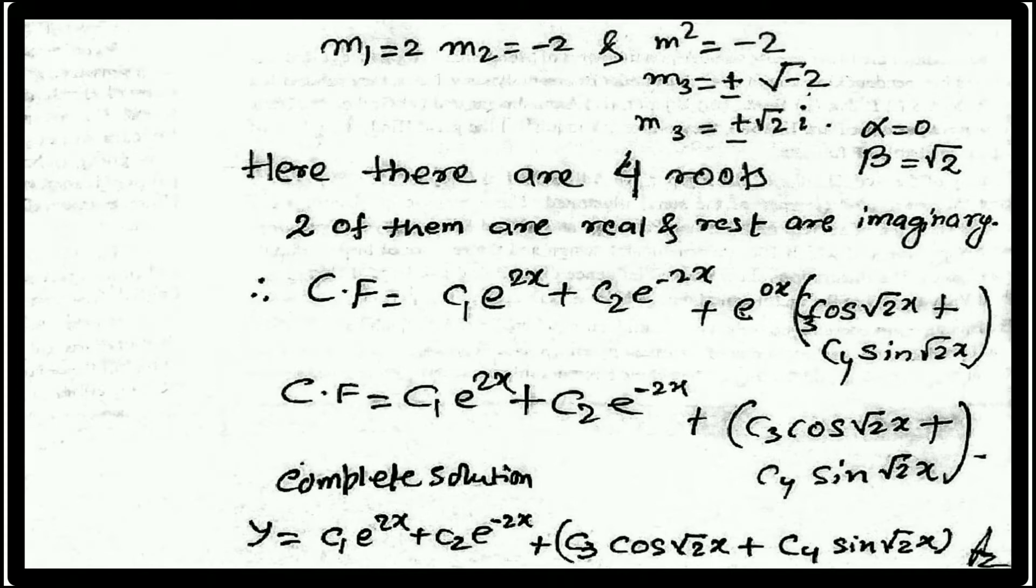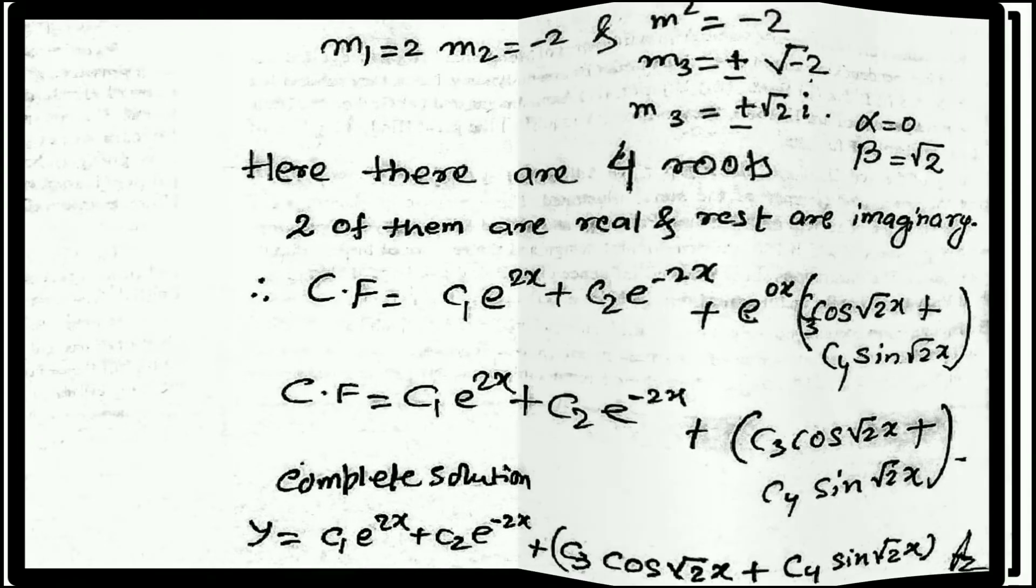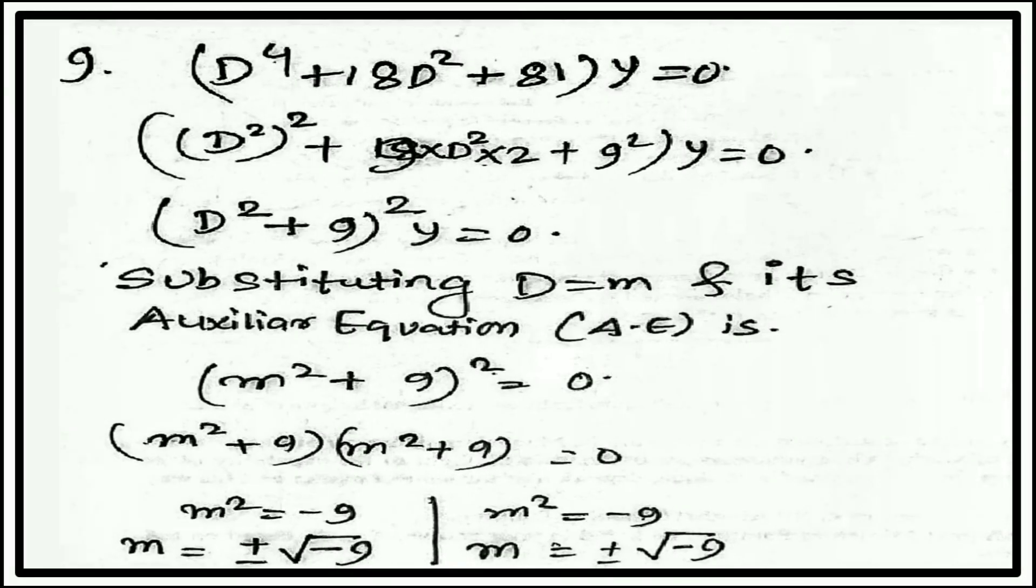So here we have CF equal to c₁e^(2x) plus c₂e^(-2x), plus c₃cos(√2x) plus c₄sin(√2x). It is clear because √2 has beta value. This whole expression is the complementary function.